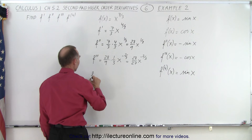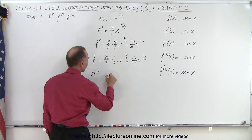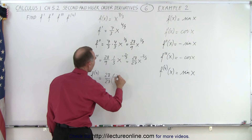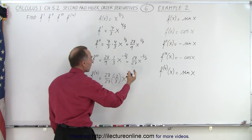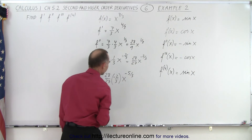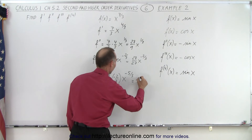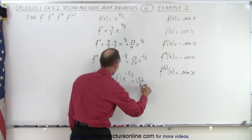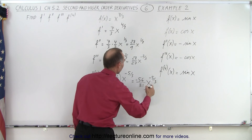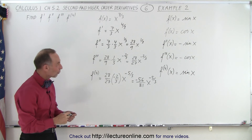Finally, I have the fourth derivative, that is equal to 28 over 27 times minus two over three, times x to the minus one would be minus five over three. Simplifying that, this is equal to minus 56 over 81, x to the minus five-thirds, and that would be the fourth derivative of our original function.